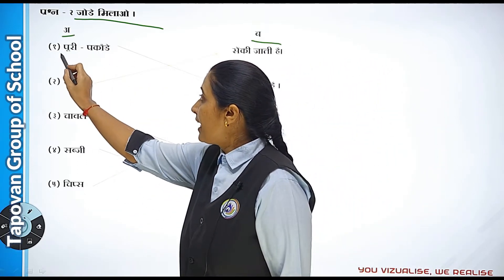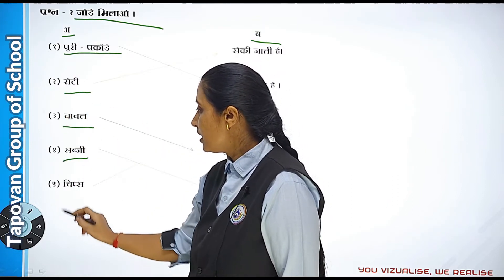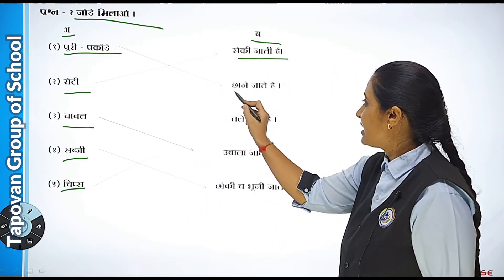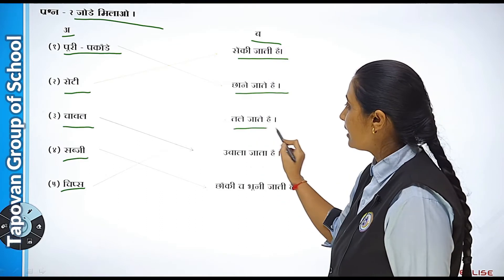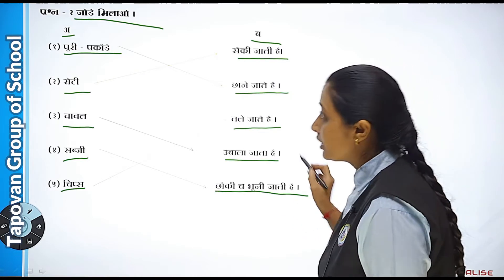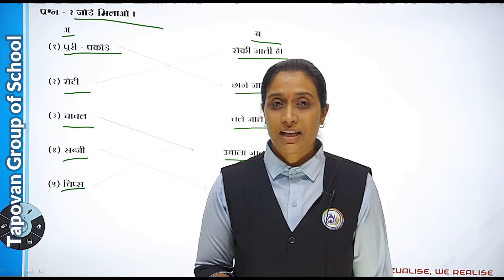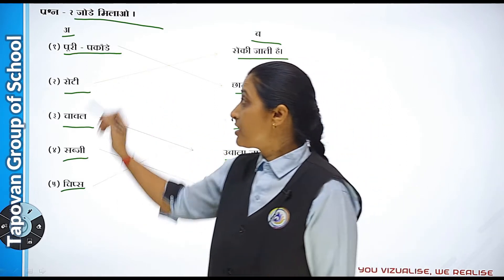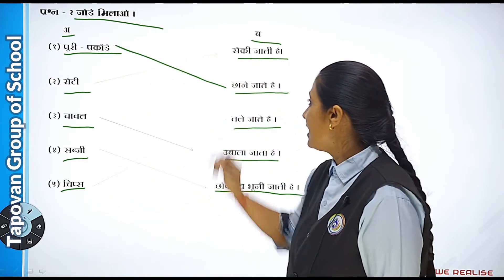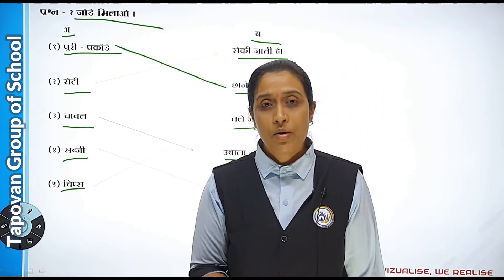Yahaan likhna hai. Part A mein hain: puri, pakodhe, roti, chawal, sabji, chips. Aur Part B mein hain: chane jaati hai, tale jaate hain, ubala jaata hai, cheki ya bhooni jaati hai. Toh bachcho, yahaan se aapko uske saamne match karna hai. Jaise pehla hai puri, pakodhe — toh uske saamne 'chane jaati hai' match karna hai.